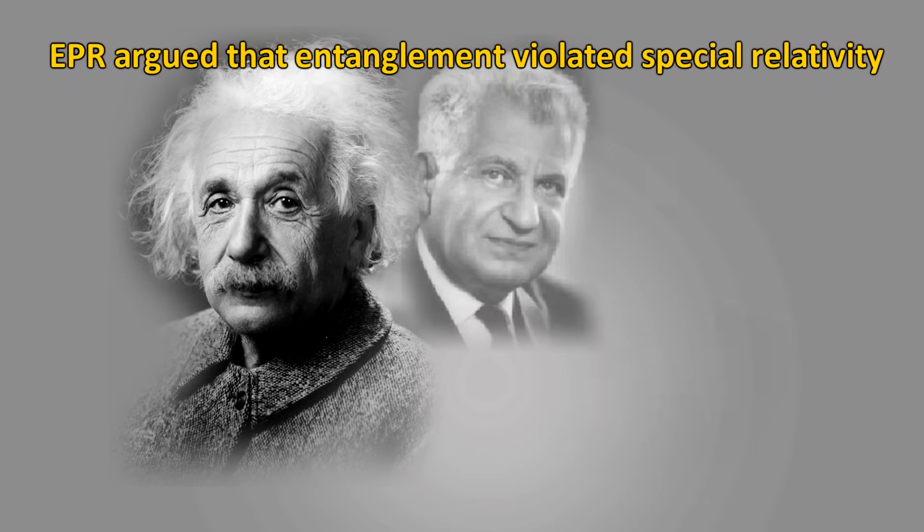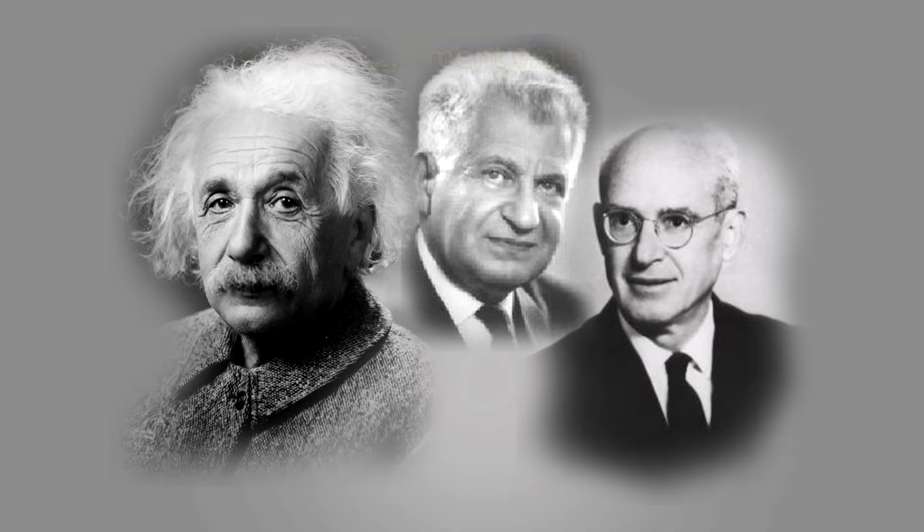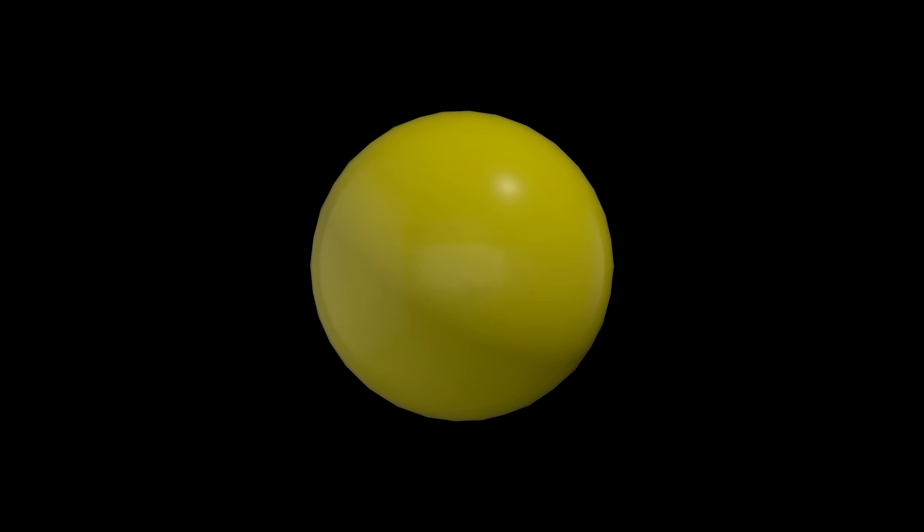EPR argued that since nothing can travel faster than light according to the rules of special relativity, this should invalidate the Copenhagen interpretation. This theorized violation is the EPR paradox. EPR proposed instead that there is likely another theory which would show that the two entangled photons were in cahoots from the very beginning, that their states were predetermined from their creation.